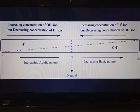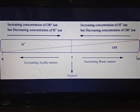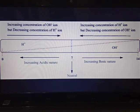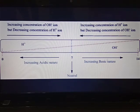The pH scale ranges from 0 to 14. The middle value, pH 7, is neutral. Solutions with a pH below 7 are acidic in nature, and solutions with a pH above 7 are basic in nature.